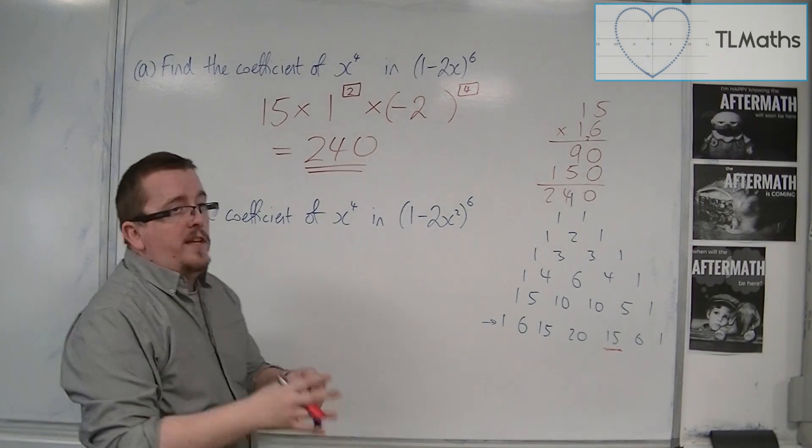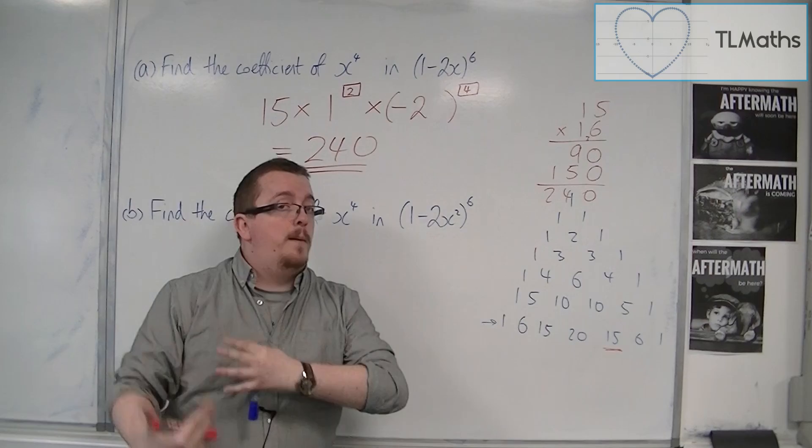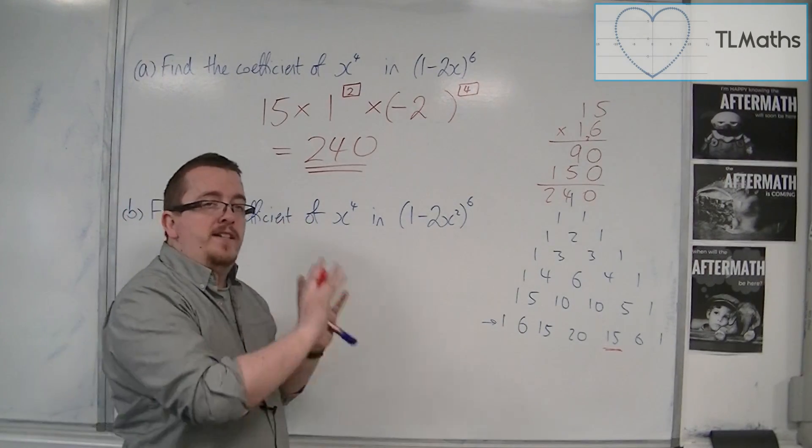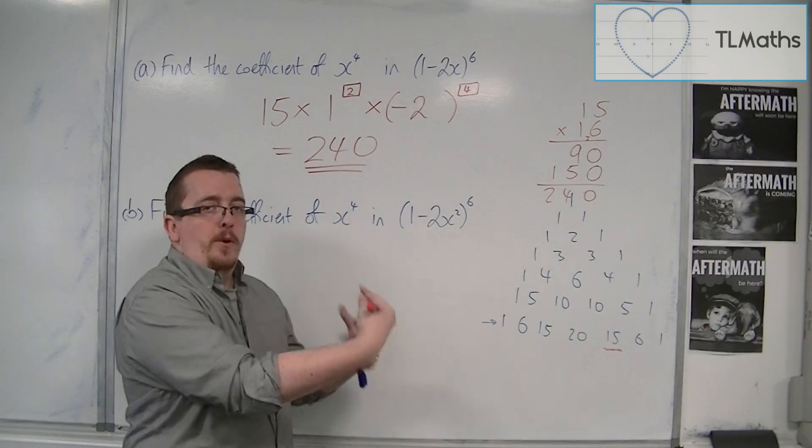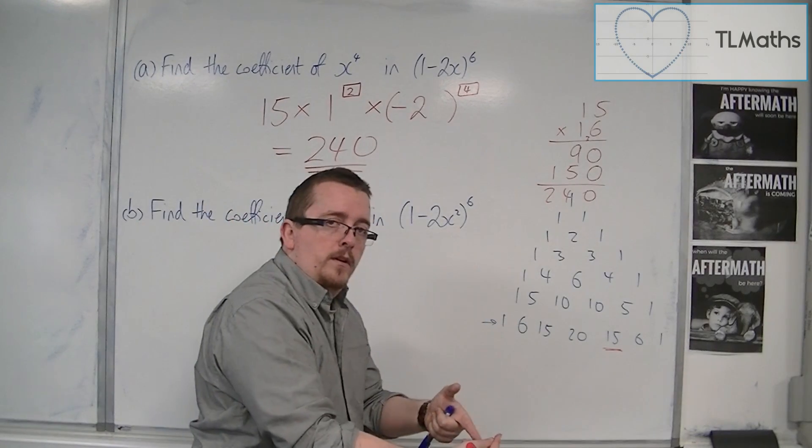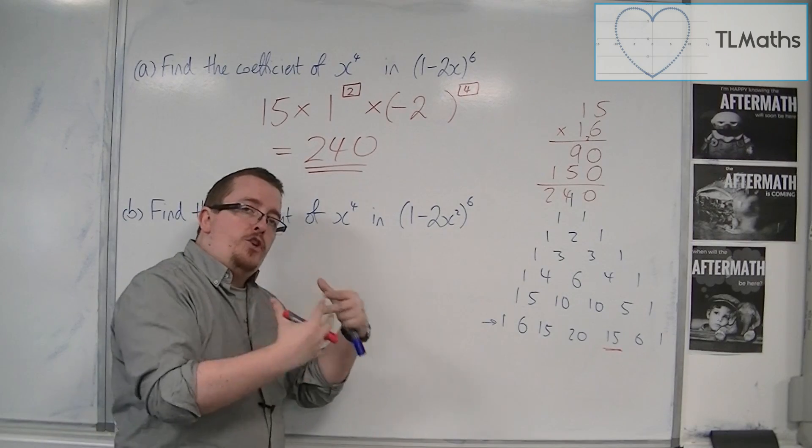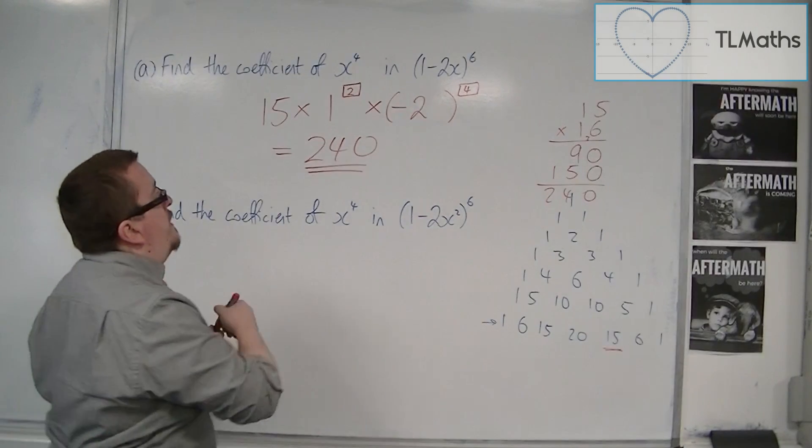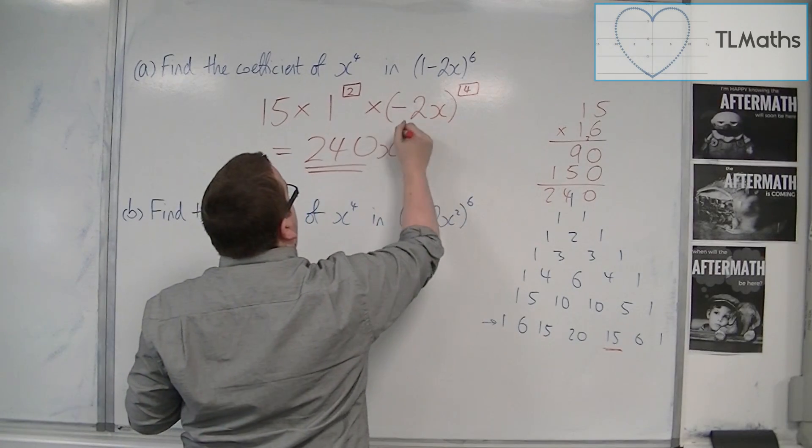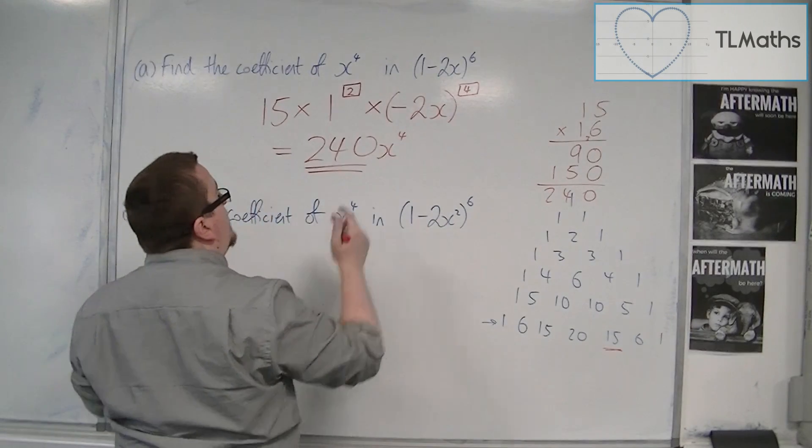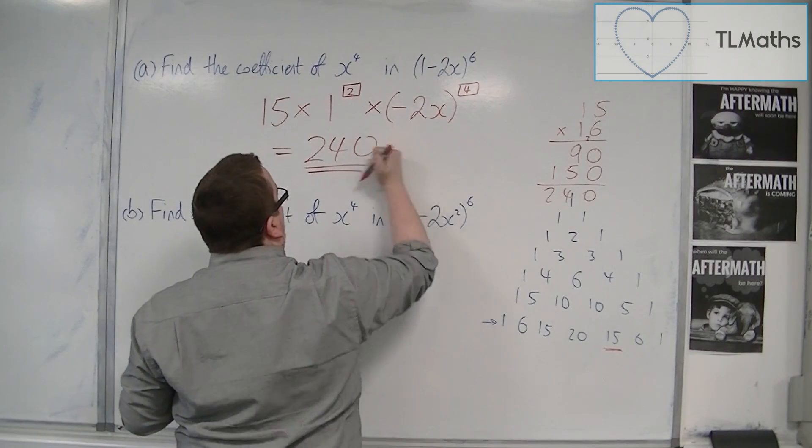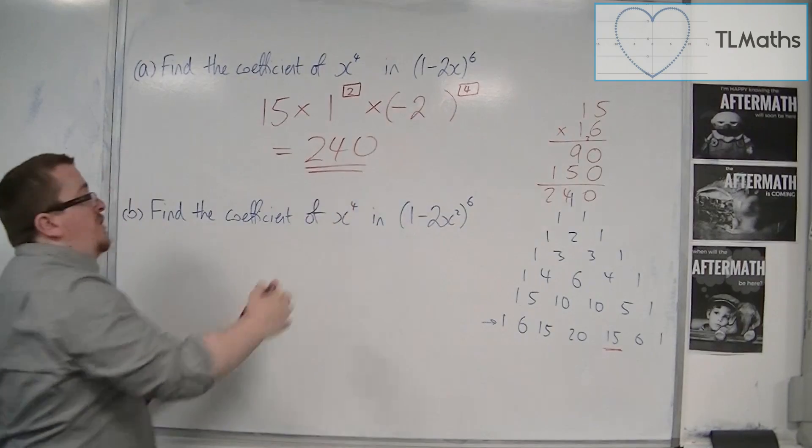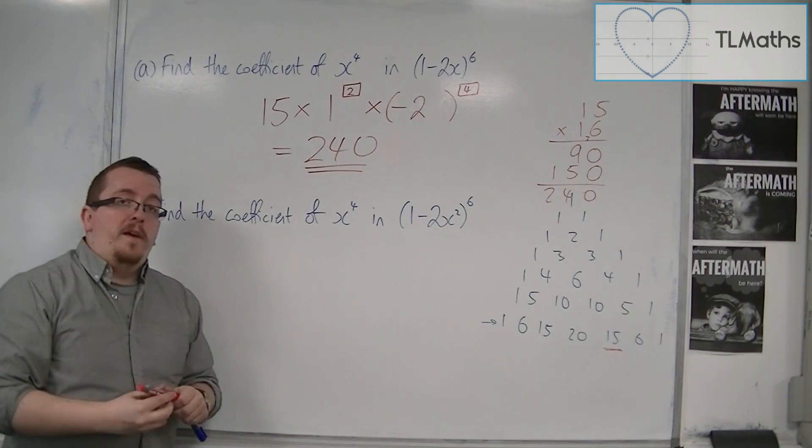Now when it's asking for the coefficient, we just want the number that would be in front of the x to the 4. I don't want to write the coefficient is 240x to the 4. You need to know that the coefficient means the number in front of. So if you've kept the x there and you write that there, you're going to need to just get rid of that x to the 4 and that x so you could identify it just by the coefficient.